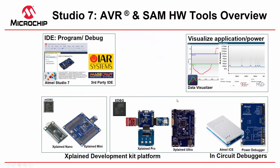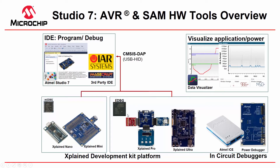Looking at the overview of this development kit platform, the Mini Embedded Debugger is on the Nano and the Mini, and the Embedded Debugger platform is for the Pro and Ultra. The same functionality is also available in the standalone debuggers, the Atmel ICE and the Power Debugger. All these debugging platforms communicate over CMSIS-DAP to the IDE, Atmel Studio, but this also supports IAR and Imagecraft as third-party IDEs.